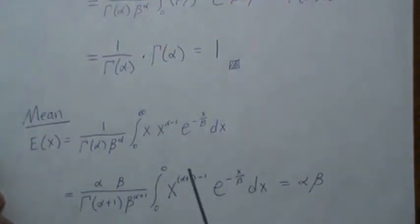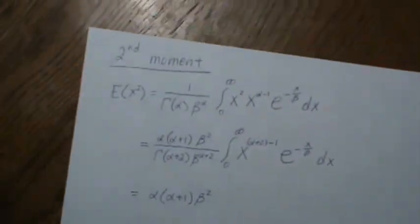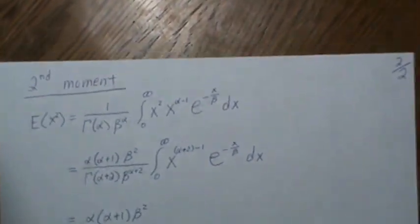We do that because then this piece is 1, leaving just alpha times beta, and that's the mean of a gamma function.